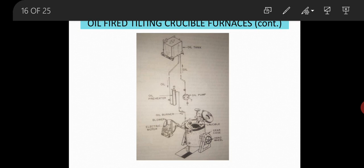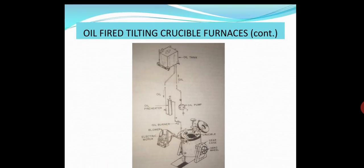At a height, that oil tank, from the oil tank, oil comes through the oil preheater. It comes through the crucible furnace, and with the help of a blower, air is drawn into the furnace. Air and oil mixture enters into the crucible furnace chamber, where it is burned, and heat is generated. Due to this heat, the metal melts inside the crucible.